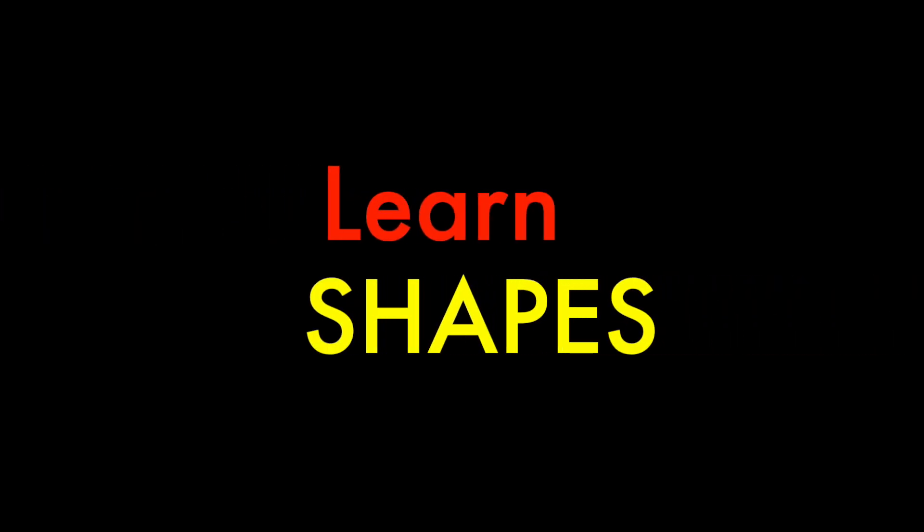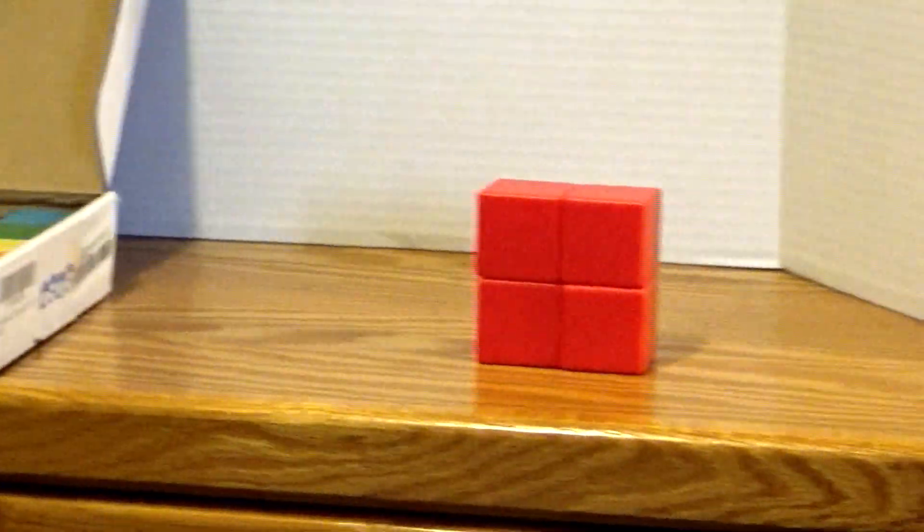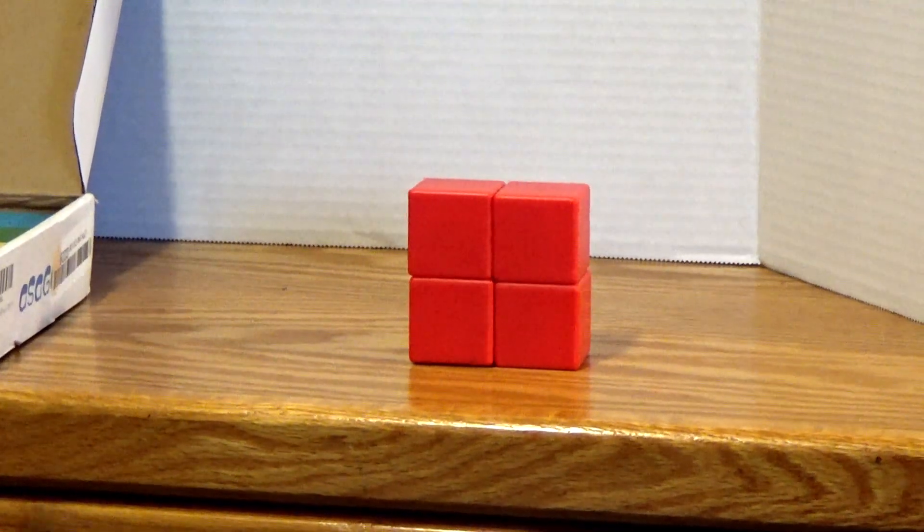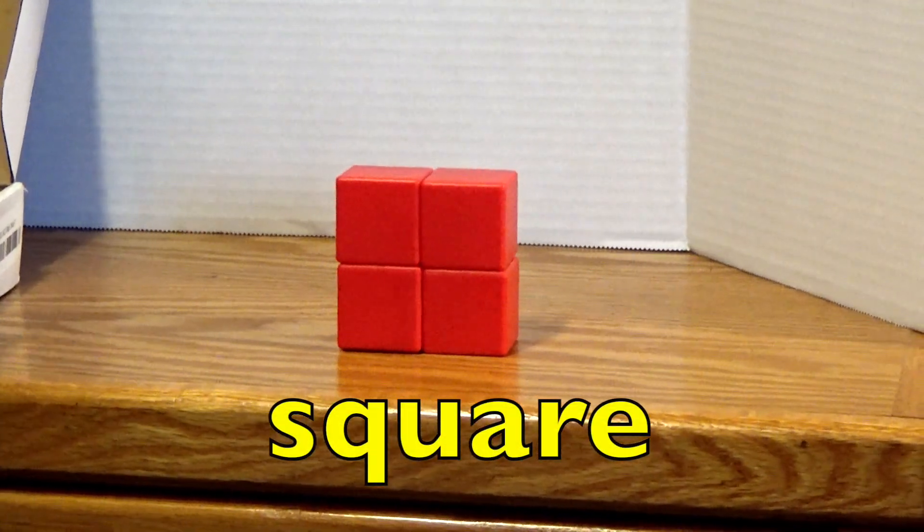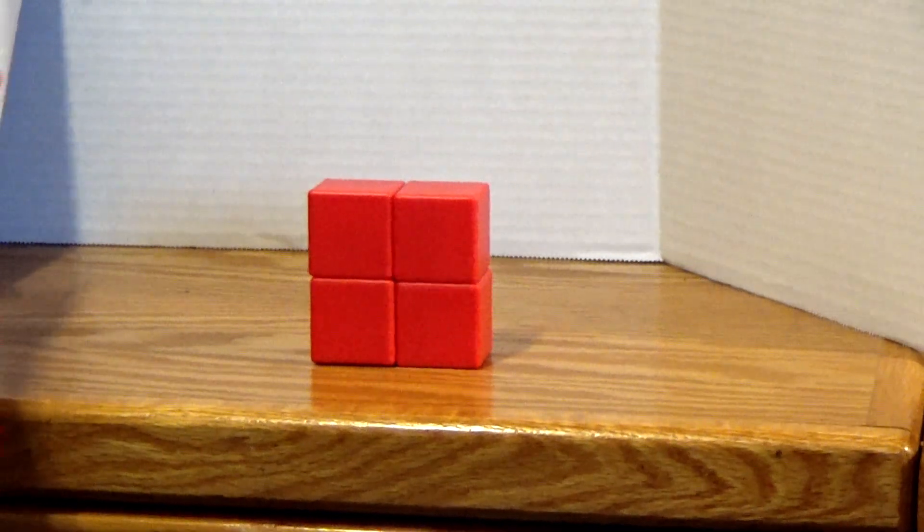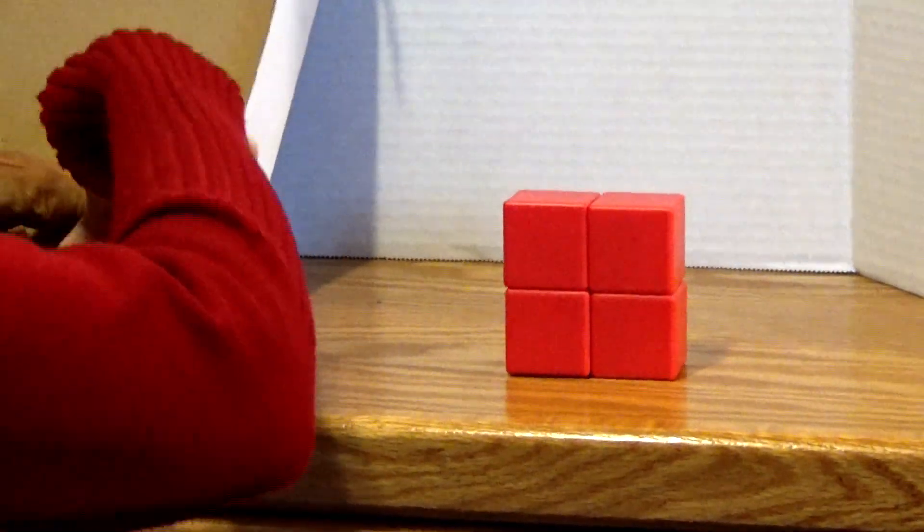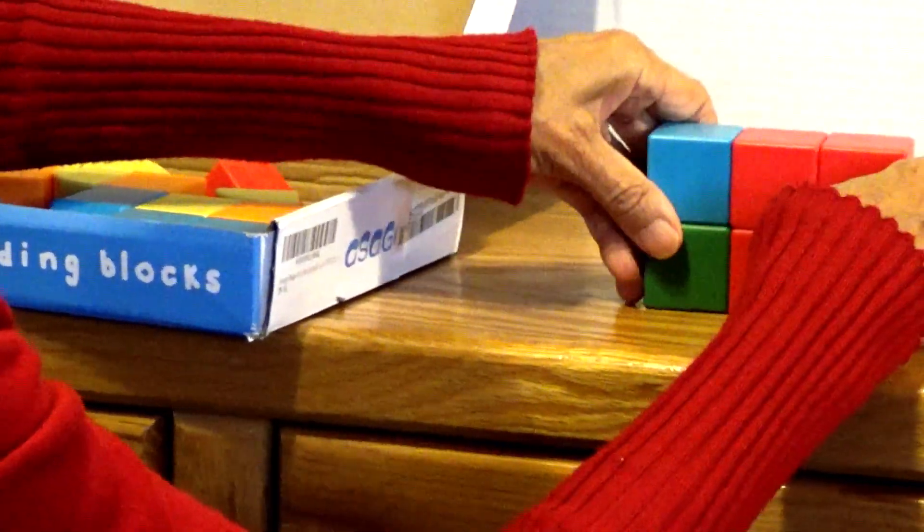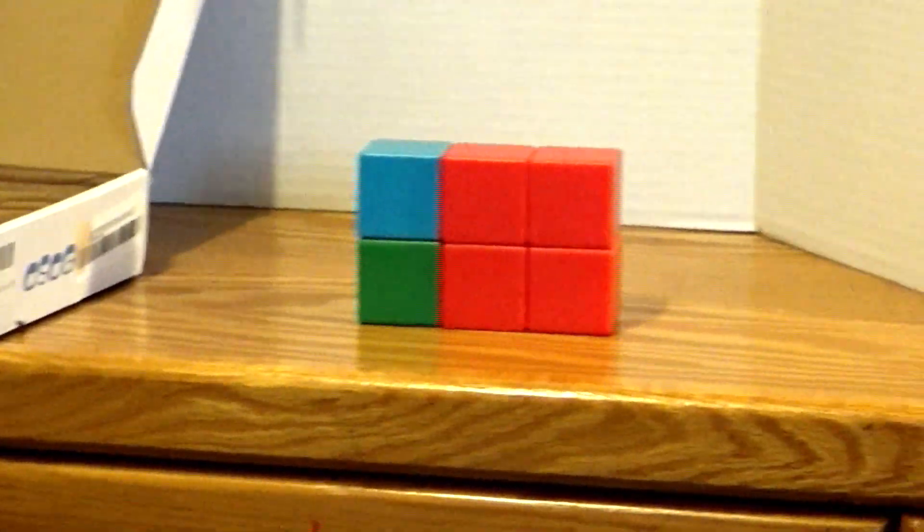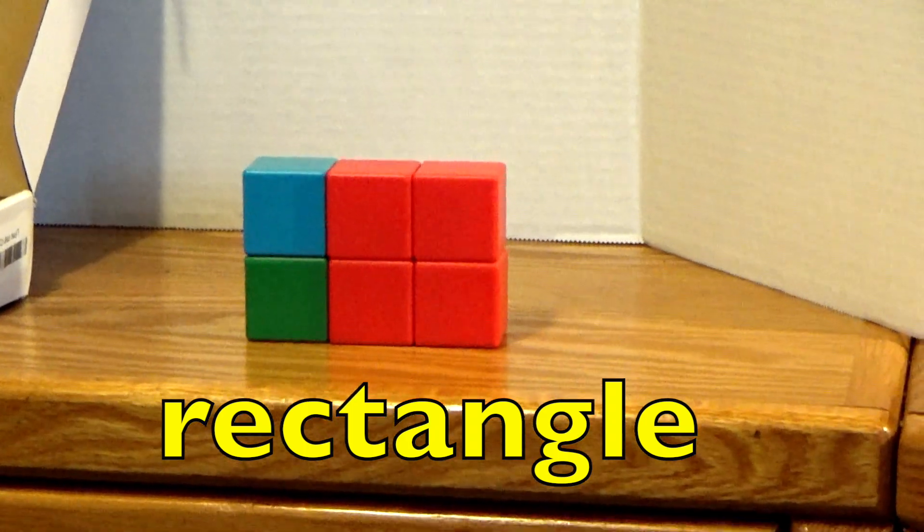Learn shapes. Now what shape is that? That is a square. And if I put two more squares on this square here, what shape do we have now? That is a rectangle, isn't it?